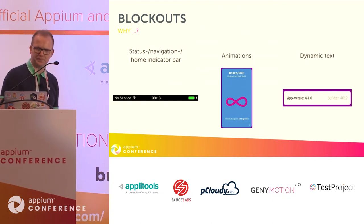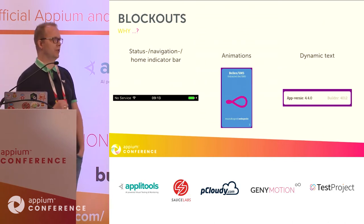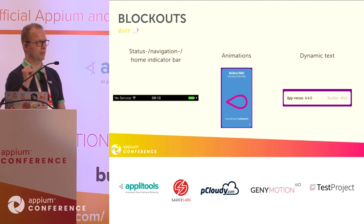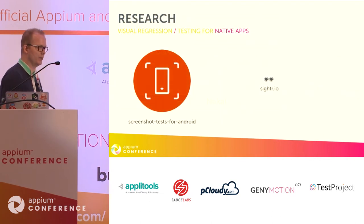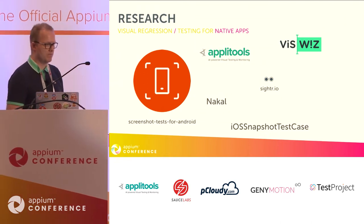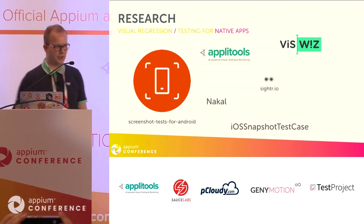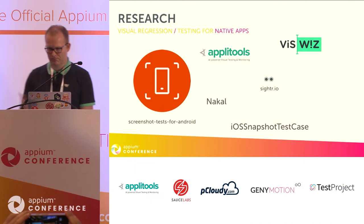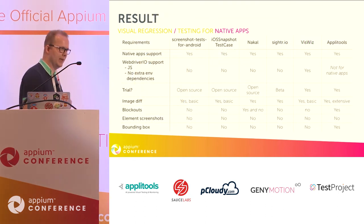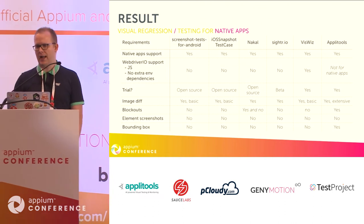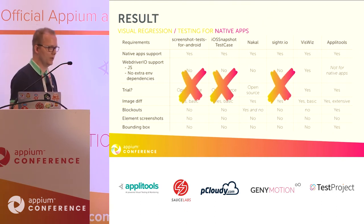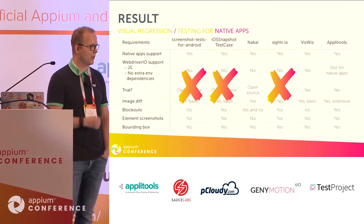So let's take a look at the research we did for all the tools. One requirement was native app support. The research was quite hard because there are not a lot of tools out there to support visual regression for native apps. We found AppliTools, Screenshot Tests for Android, FizzWiz, Nakal, and others. After creating a list and checking against our requirements, we needed a cross-platform solution — so we could already narrow the list down because some tools were only for iOS or only for Android.